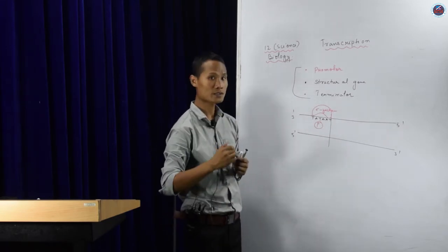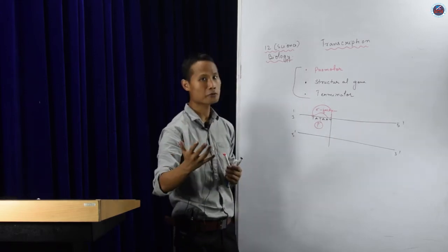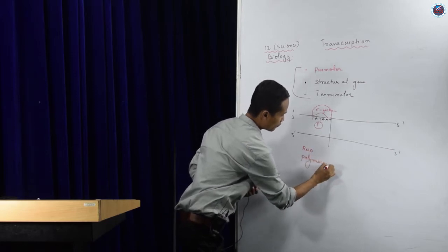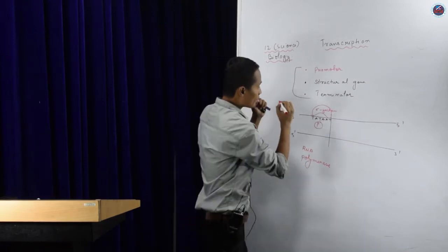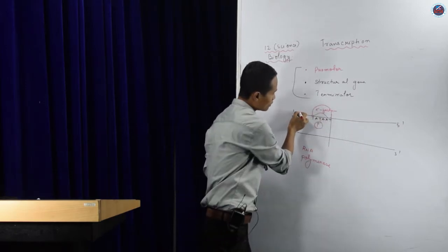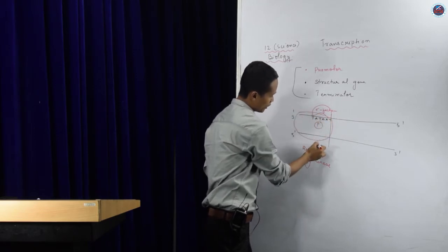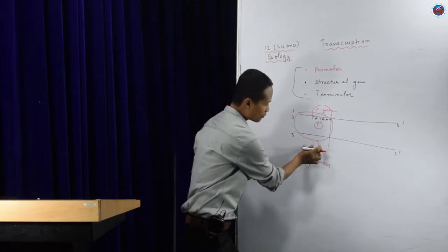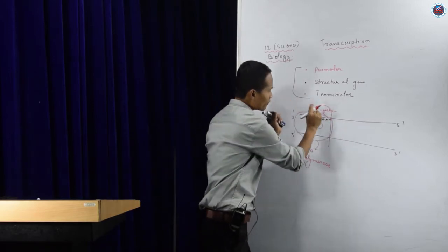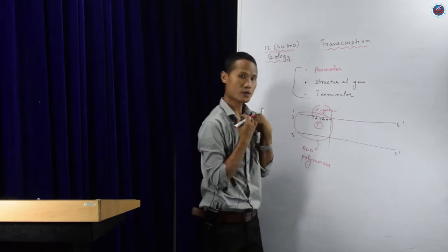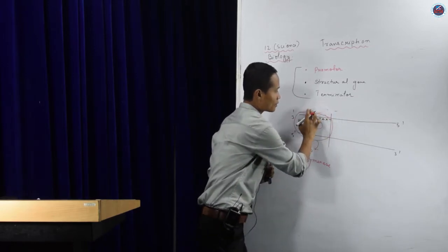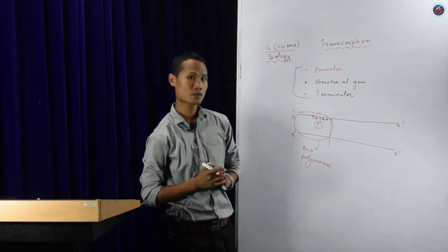Once sigma factor binds, the main enzyme — RNA polymerase — will come into action. There are three different types of RNA polymerases, but let's take it in a general form. This RNA polymerase will go and attach where the sigma factor has bound. Once the sigma factor comes into action, RNA polymerase will come automatically, and then the sigma factor will release. This is said to be initiation.